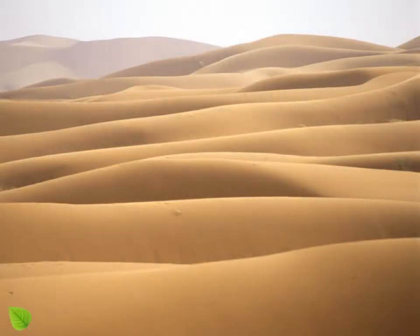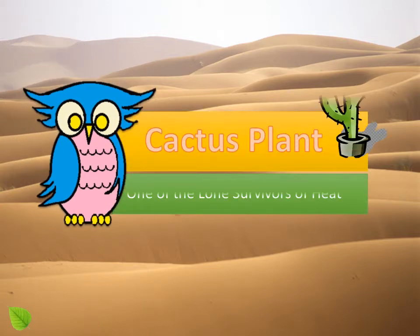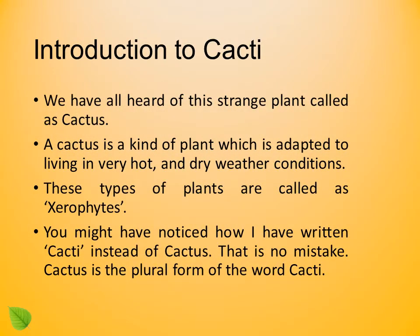Hello friends, my name is Bertie and today we are going to learn about the cactus plant, which is one of the lone survivors of heat. Introduction to cacti — we have all heard of this strange plant called the cactus. A cactus is a kind of plant which is adapted to living in very hot and dry weather conditions. These types of plants are called xerophytes.